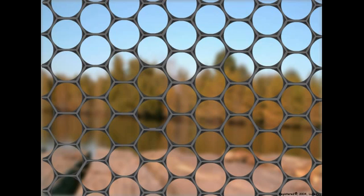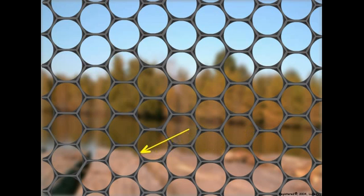The lens and cones of insect ommatidia are not capable of changing their focal length, so insects are probably nearsighted and distant objects appear blurry. Note that the observed scene is most distinctive when broken patterns caused by the edges of structures occur within the field of view of a single ommatidium or between adjacent ommatidia.